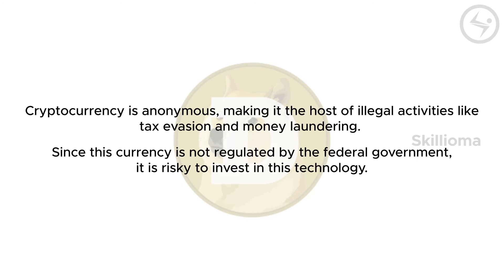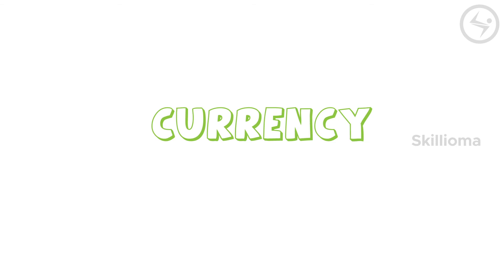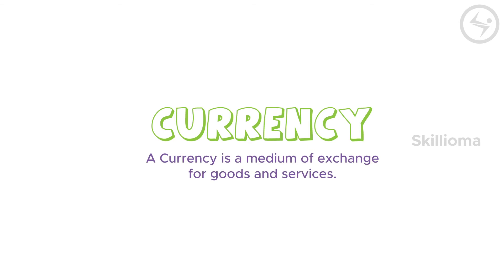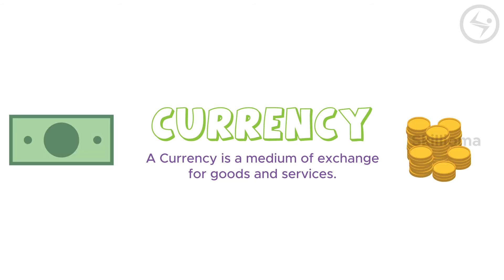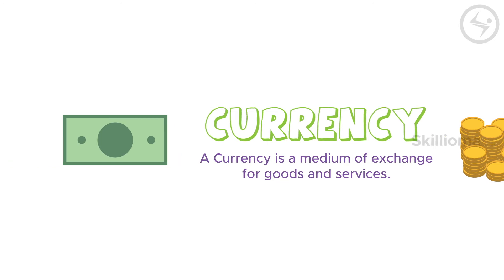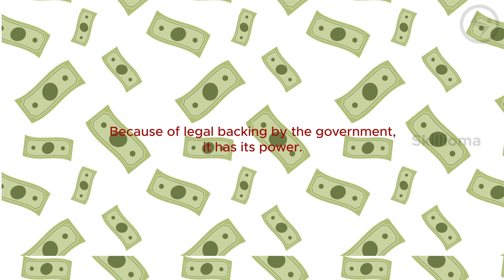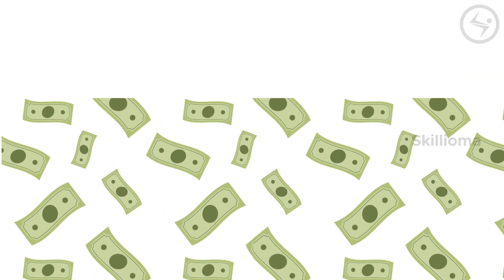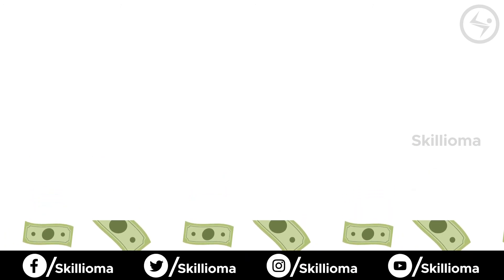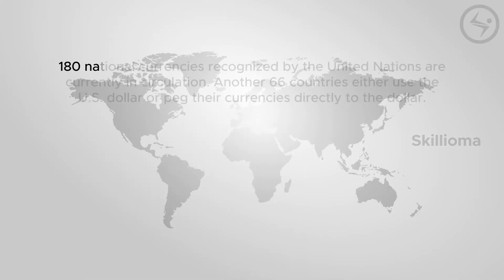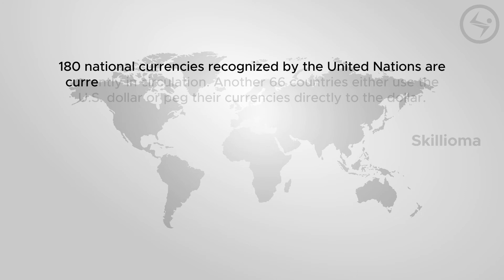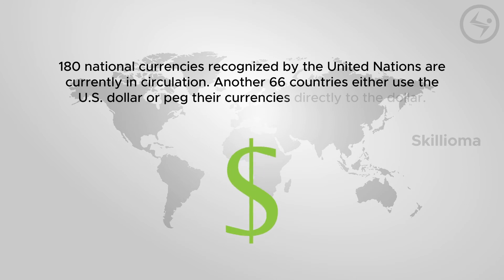Now let's jump into the most important piece of paper we deal with every day: currency. A currency is a medium of exchange for goods and services — in short, it's money in the form of paper or coins, usually issued by a government and accepted at its face value as a method of payment. Money by itself is worthless paper, but legal backing by the government gives it power. According to worldatlas.com, 180 national currencies recognized by the United Nations are currently in circulation, and another 66 countries either use the US dollar or peg their currencies directly to the dollar.